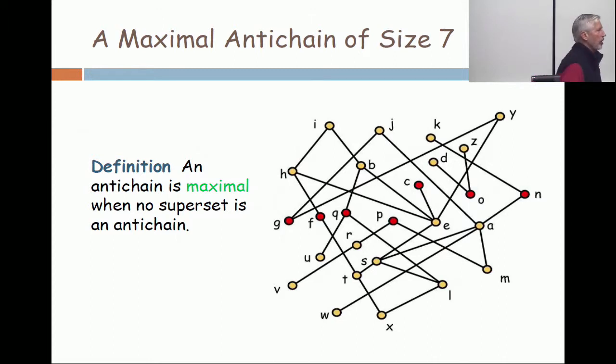Again, that takes some looking. That's not a totally obvious statement. You have to stare at this picture and check a number of things. In fact, you have to pick up every additional point and see that you cannot add it to the seven and keep it an anti-chain.